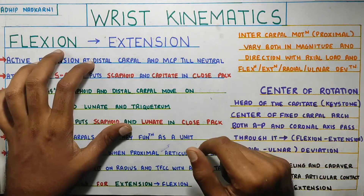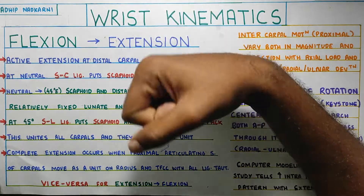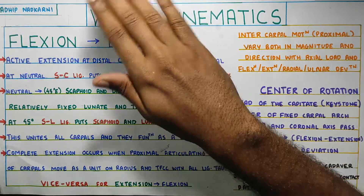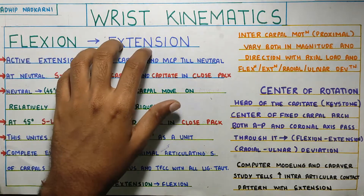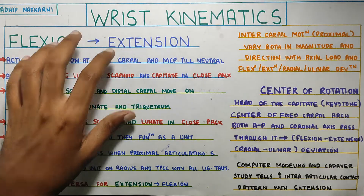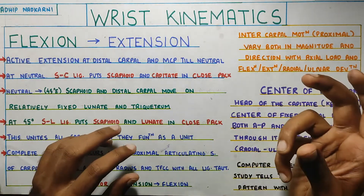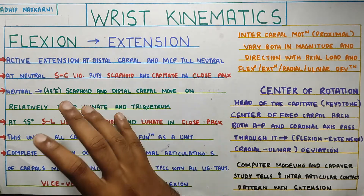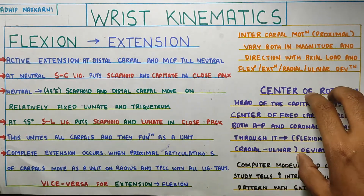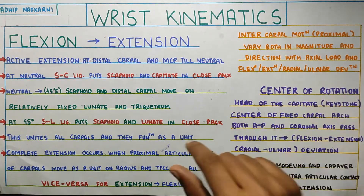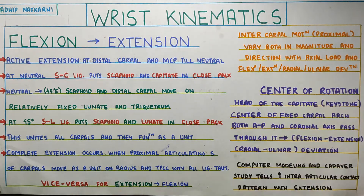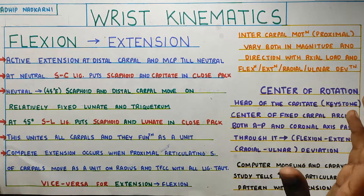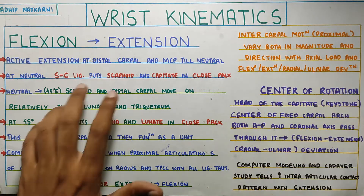The movements possible at the wrist joint are flexion, extension, and radial and ulnar deviation - just four movements. We will start with flexion to extension, what exactly happens, what bones are moving and how the whole process occurs. Then we'll move on to the center of rotation and what axis the movement occurs around, plus a few more points about the wrist joint in general.